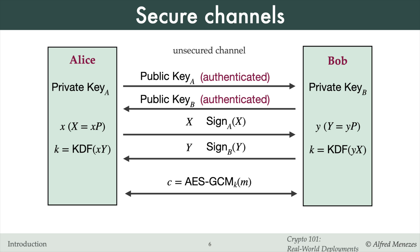This leads to the crucial question: how do Alice and Bob obtain authentic copies of each other's public keys? The primary challenge in building secure channels is ensuring the distribution of authentic public keys. We'll see in the next lecture that this is most commonly accomplished in practice by using certificates issued by a certification authority.